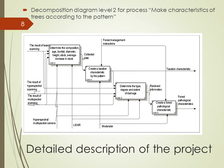This is the decomposition diagram level 2 for the process of making characteristics of trees according to the pattern. It shows that the system determines the tree's parameters from the results of laser, hyperspectral and multispectral scanning. From this collected data, it creates a taxation characteristic. Then it determines the type, degree and extent of damage also from the scanning results, and creates a pathological characteristic.